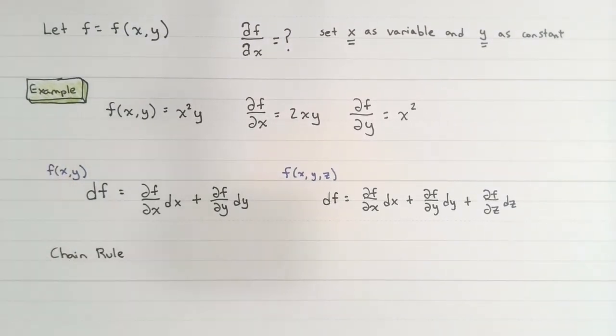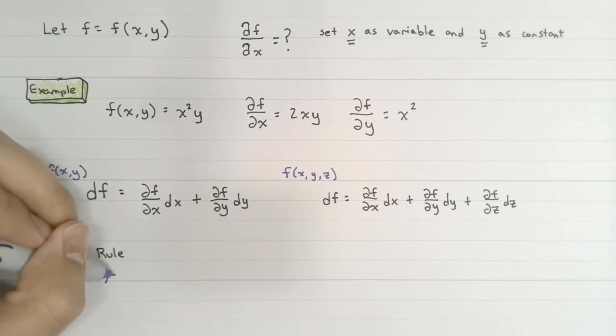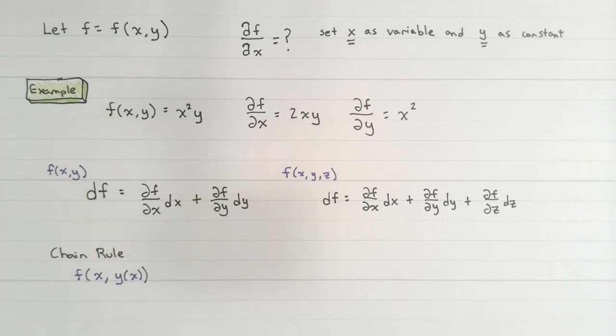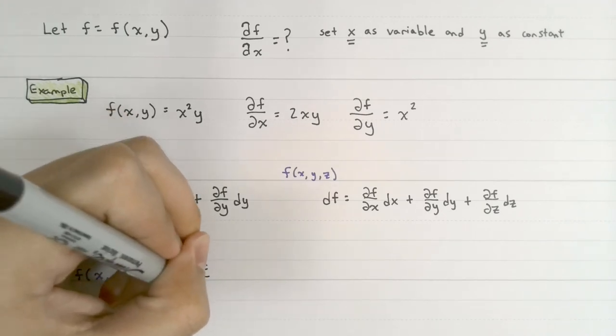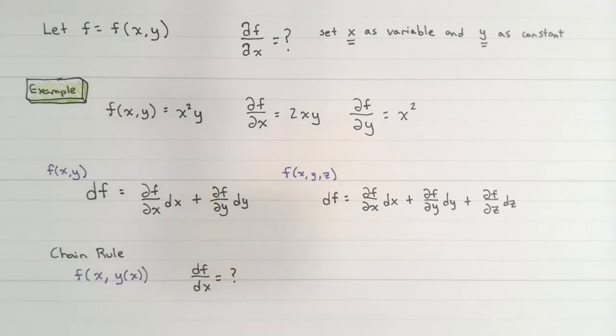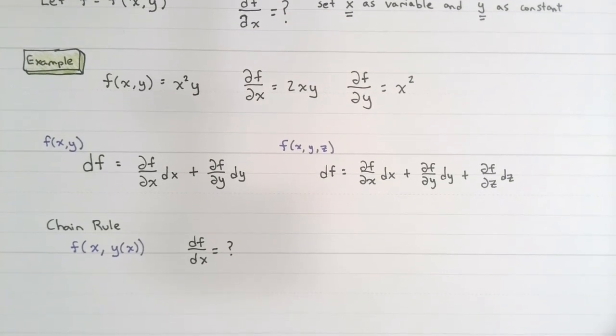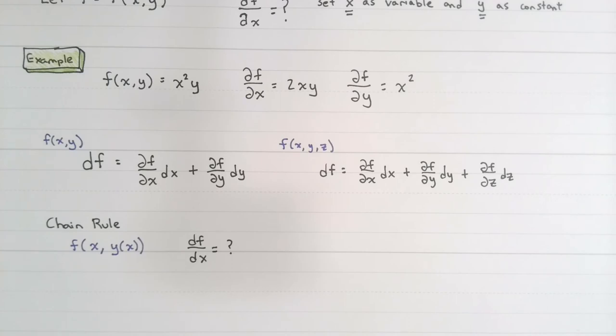So what does the chain rule look like when we're using partial derivatives? Let's suppose that f is a function of x and y, where y is also a function of x. In this case, what is the change of f with respect to x? Notice that I'm not asking for the partial derivative of f, I'm actually asking for the total derivative, or the total change of f, with respect to x.